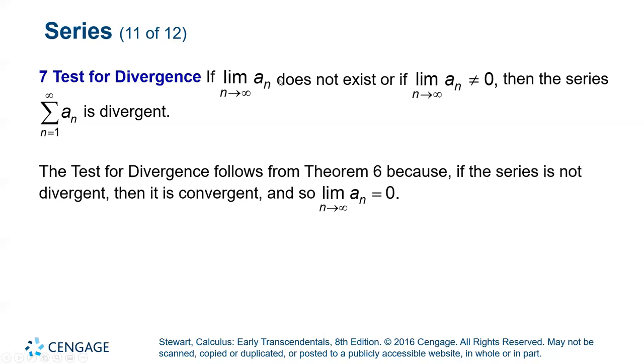Our next item is the test for divergence. If the limit of a sequence does not exist or is not zero, then that series is divergent. Remember, a sub n by itself is the sequence. The sum of a sub n is the series. So if you know the limit of the sequence doesn't exist or is non-zero, then we know for sure that the series is divergent.